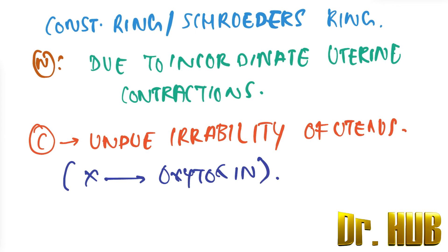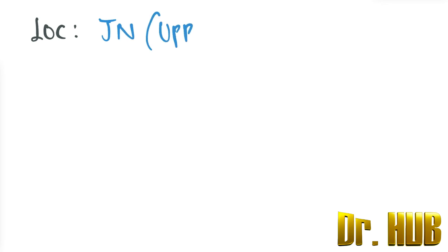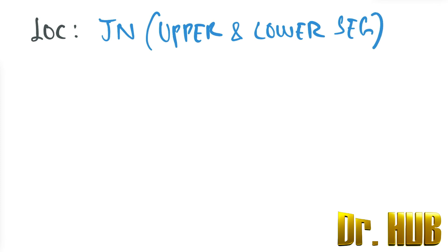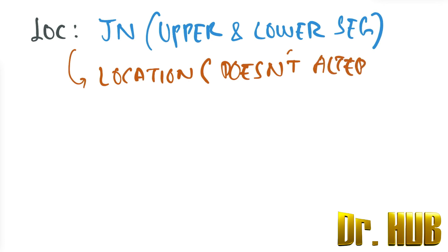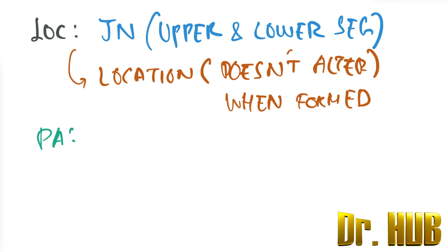Now let's look at the location. The constriction ring is usually located at the junction of the upper and the lower segment. The location does not alter once formed. Per abdomen, the ring is not felt.